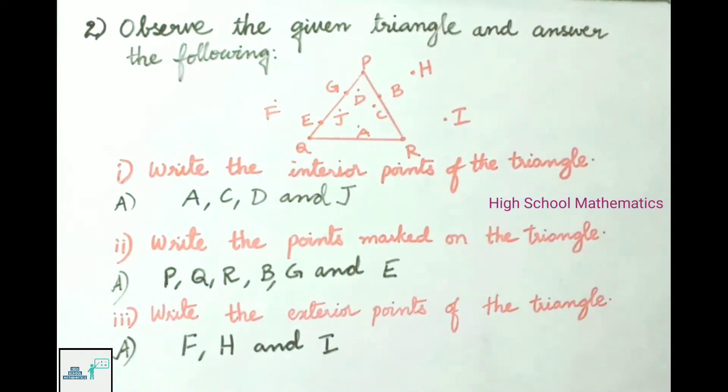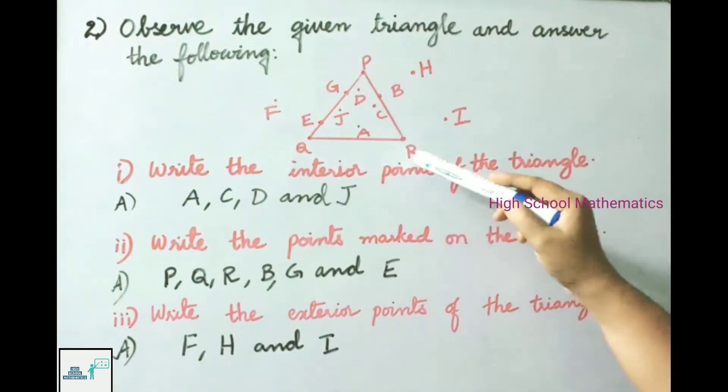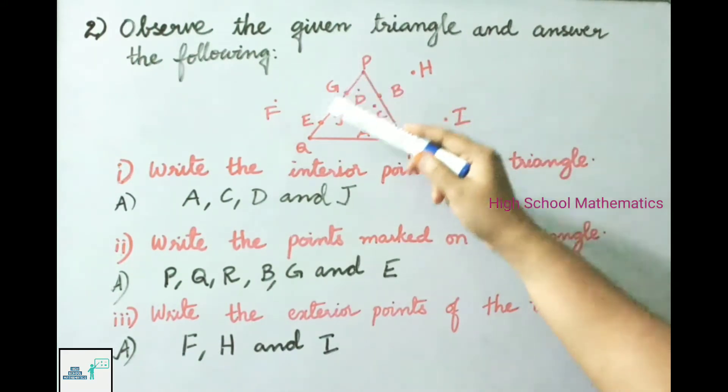See now question number 2: Write the points marked on the triangle. The points marked on the triangle are P, Q, R, B, G, and E.